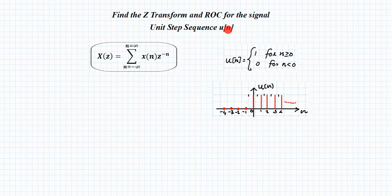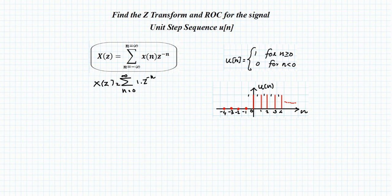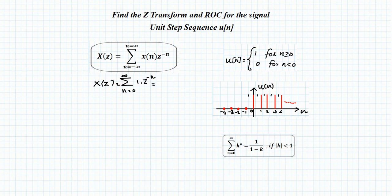Substituting U[n] into the formula, since U[n] = 1 for n ≥ 0, the summation becomes X(z) = Σ from n = 0 to ∞ of z^(−n). Applying the geometric series formula Σ k^n = 1/(1 − k) for |k| < 1, we get X(z) = 1/(1 − z^(−1)).